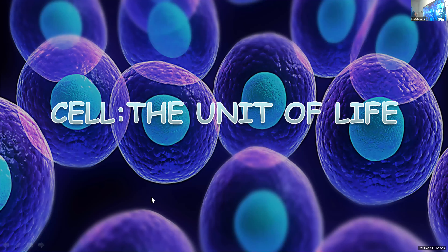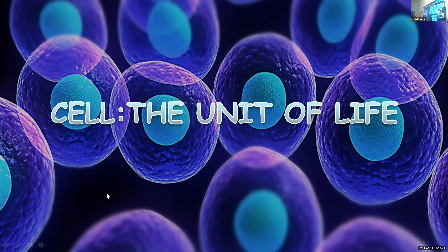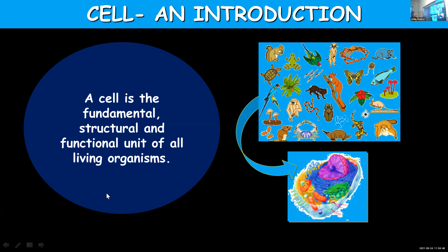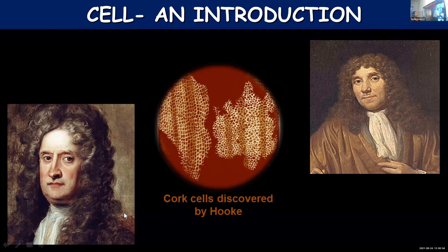Cell: The Unit of Life. Cell is a structural and functional unit of life. All living organisms are made up of cells. Cells were first discovered by Robert Hooke in 1665. He observed a slice of cork, which is a dead tissue, and he observed dead cells for the first time.